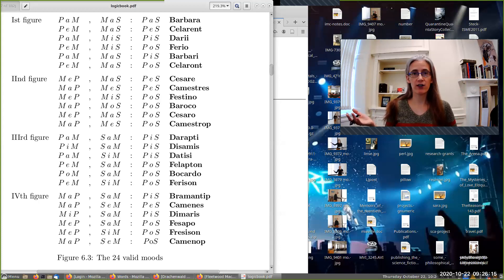Barbara, Celarent, Darii, and Ferio. But then we've got Camestres, Festino, Cesare, Baroco, Ferison, Camenes, all of these other really weird names for syllogisms. Why?